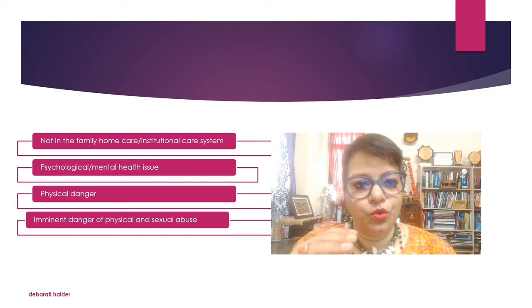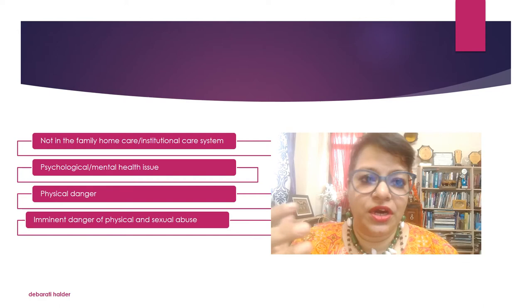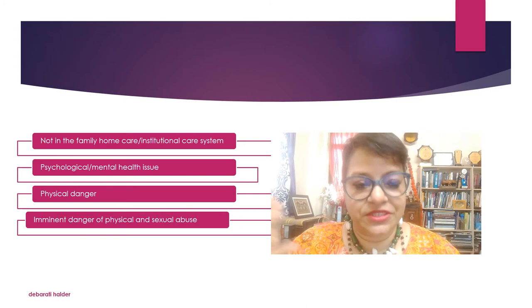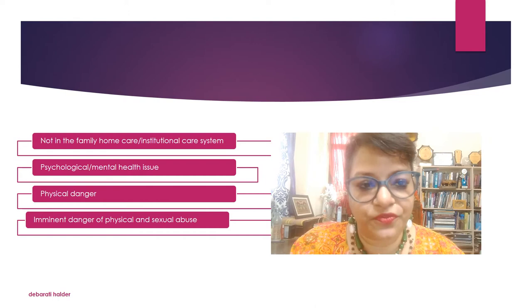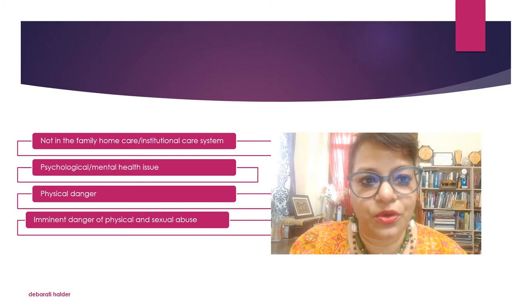The four categories are: one, those children who are not in their family care system, family home system, or any institutional care system; two, those children who are suffering from some kind of psychological or mental issues; three, those children who are in physical danger; and lastly, those children who are in imminent danger of physical as well as sexual abuse.